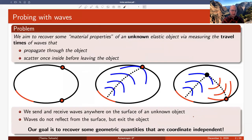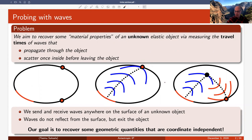The goal of my talk is to address whether we can recover some material properties of an unknown elastic object by measuring the travel times of two different types of waves. We are sending waves from the boundary of the object, and they travel through it, and I have measurement devices to record when the wave arrives on the other side. The main part of the talk concerns a scattered situation: waves sent from the boundary propagate inside the body, scatter at a point, then return to the boundary where we measure the total travel time.